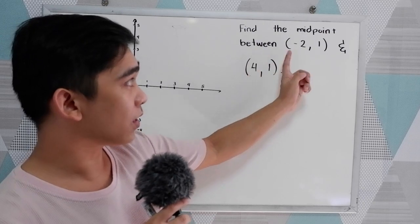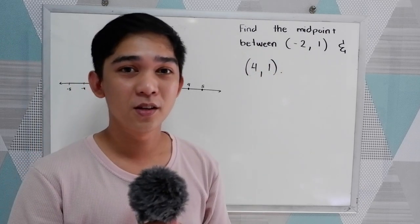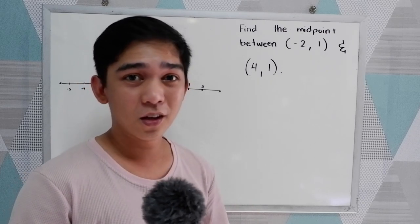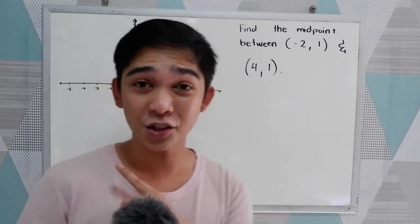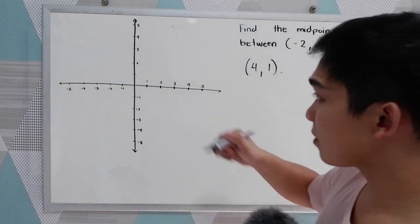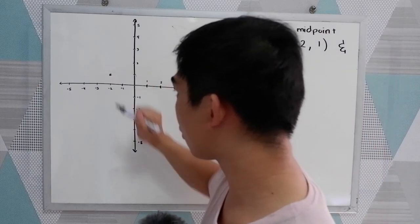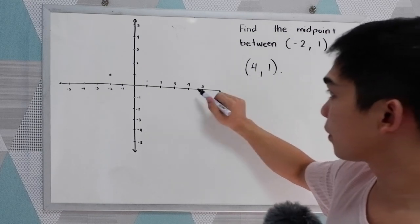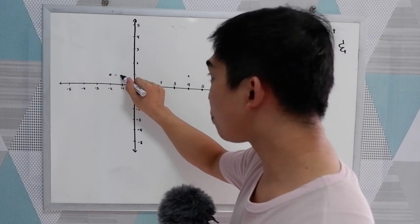Find the midpoint between negative 2, 1 and 4, 1. So basically, if we're going to get the midpoint, the first step is to use the partition plane and plot the points. So negative 2, 1 — plot our first point, negative 2, 1. That would be our first point. And our second point is 4, 1. Connecting the two points.